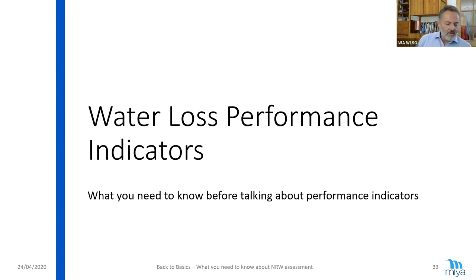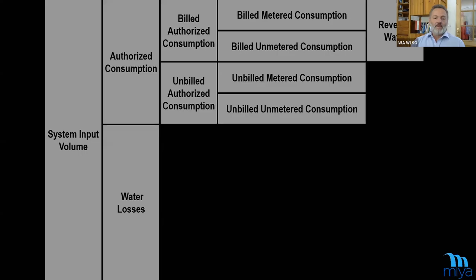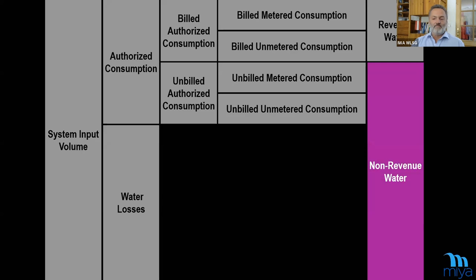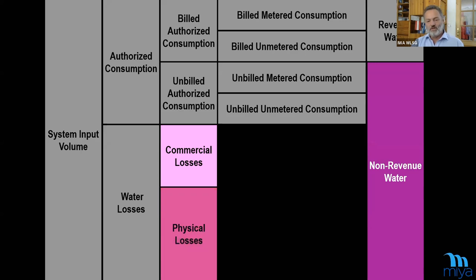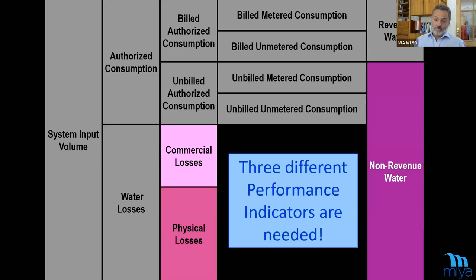Now we can start to talk about the water loss performance indicators. We have three different things: non-revenue water, commercial losses, and physical losses. Frankly spoken, we need three different performance indicators. But what do people normally use? Only one performance indicator, and it is also the worst one: they use percentage NRW — non-revenue water expressed as percentage of system input volume. I will show you why this is so wrong.